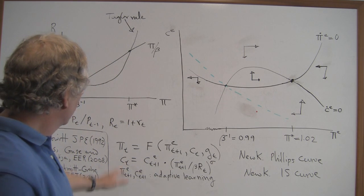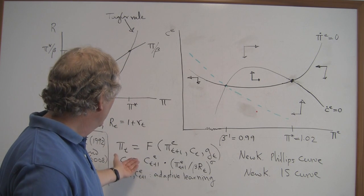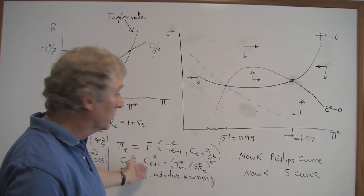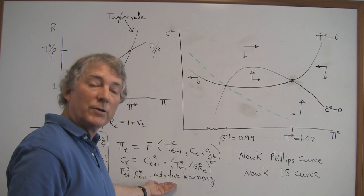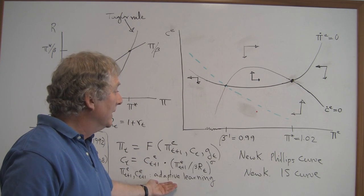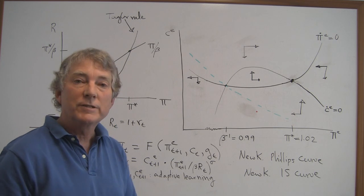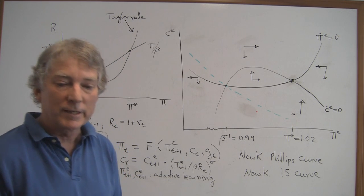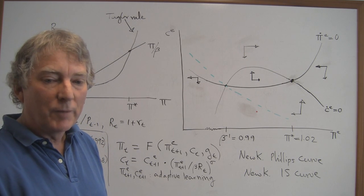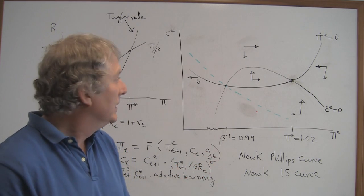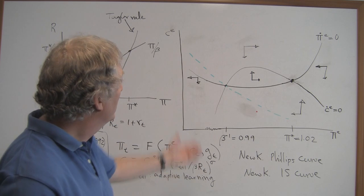So that's the model. The model is a New Keynesian Phillips curve, a New Keynesian IS curve based on the household Euler equation, adaptive learning for expectations, and this model can be studied by just looking at the expectational dynamics and represented, because it's two-dimensional, in a phase diagram, and here it is. This is what happens under adaptive learning.